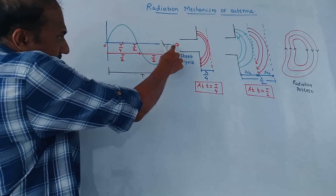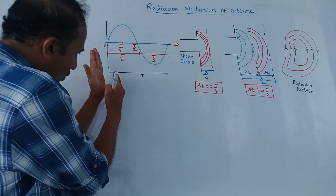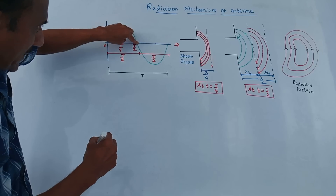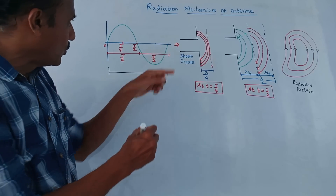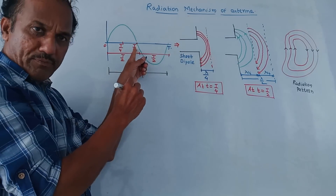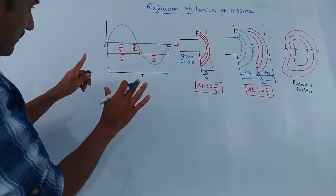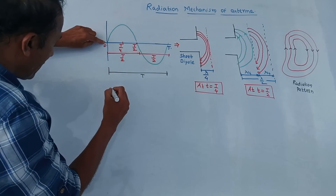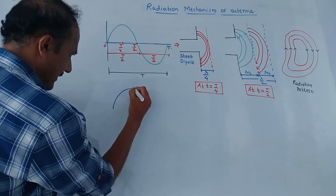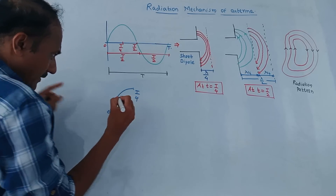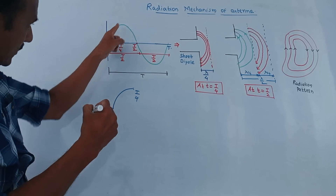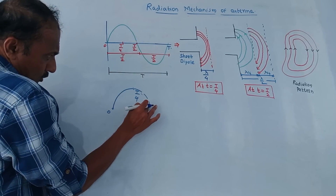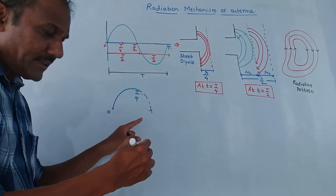This is the corresponding signal. Observe the time intervals. The total time period is T. The positive half cycle is from 0 to T/2, and the negative half cycle is from T/2 to T. In the positive half cycle, from 0 to T/4, the signal goes on increasing — charges go on increasing. From T/4 to T/2, the charges start decreasing.